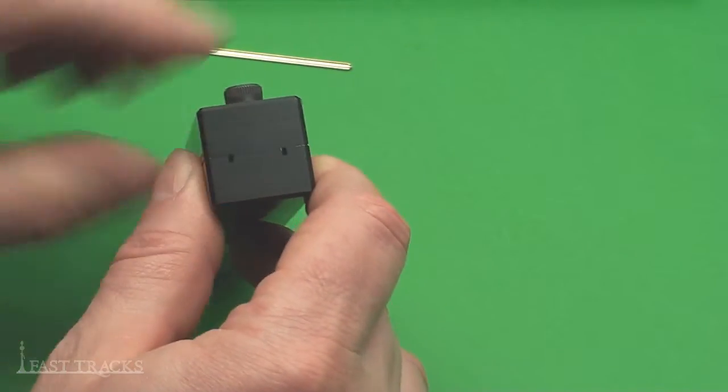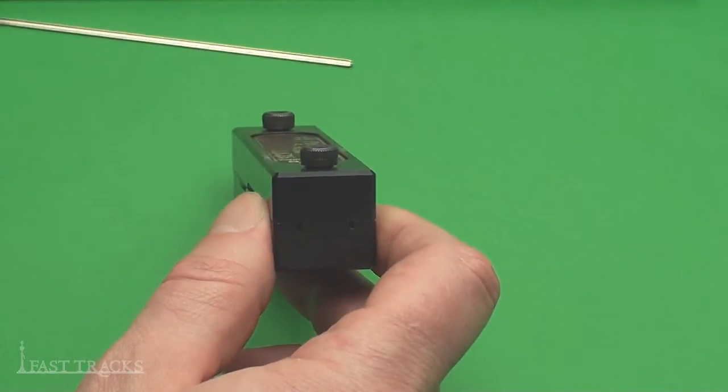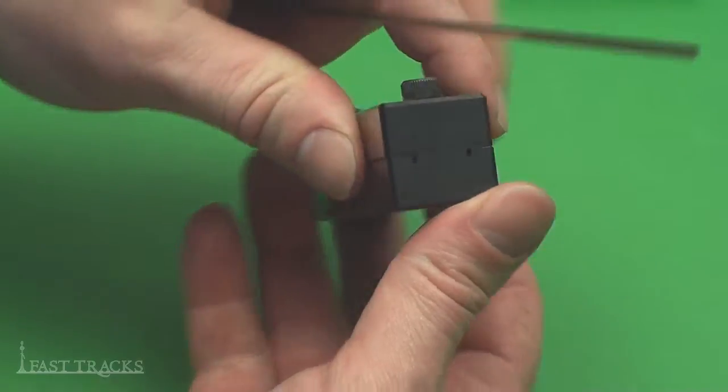You can see there's two small grooves in the tool and that's to hold the rail. So a length of rail is inserted into those grooves. When making a frog, the rail is actually put in upside down like that.